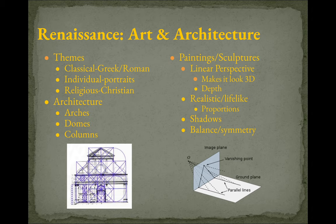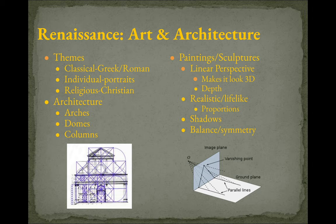Architecture-wise, we're going to see a rebirth of arches, domes, and columns, which the Middle Ages had moved away from. Painting-wise, there's the technique called linear perspective, which makes things look 3D with a vanishing point — artwork that looks realistic, like you can go out and touch it. Think of Looney Tunes where someone draws something on a wall and runs through it — that's the perspective idea. Everything is going to look lifelike, very proportional, with shadows and a lot of symmetry and geometry.